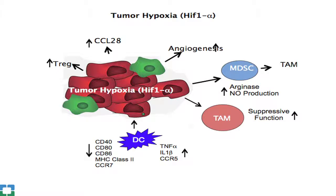In kidney cancer, the VHL mutation leads to constitutive HIF-1 alpha activation and hypoxia, which also promotes immune suppression. Tregs are increased in this setting, there is increased production of chemokines that recruit suppressive cells into the tumor, MDSCs are induced to be more suppressive and can differentiate into tumor-associated macrophages, and on the flip side, dendritic cell antigen presentation is downregulated — making the tumor microenvironment quite hostile to the immune system.